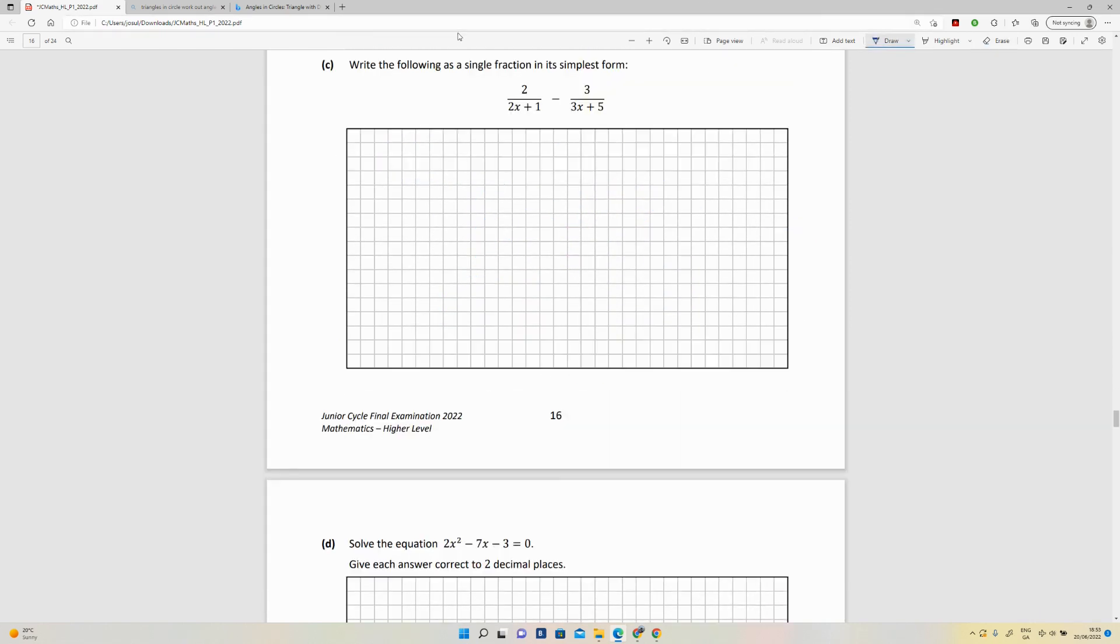Okay, part c: write the following as a single fraction in its simplest form. If you look at these two denominators, you can easily work out that they don't divide into each other, so the LCD of those denominators is going to be the product of them, so it's going to be 2x plus 1 multiplied by 3x plus 5.